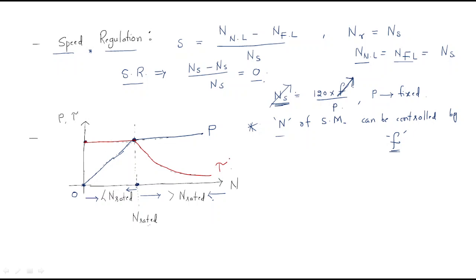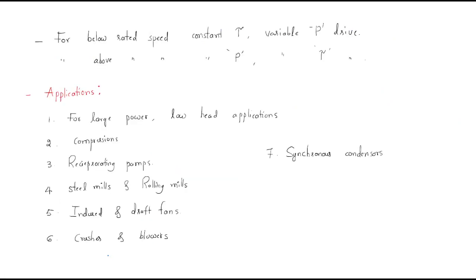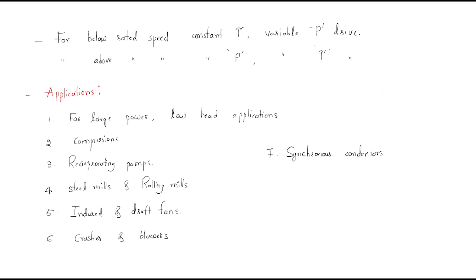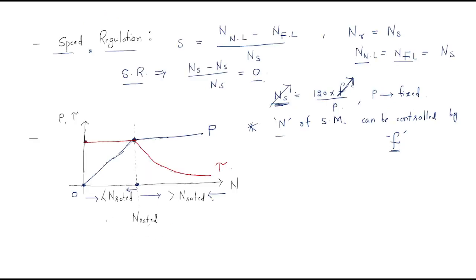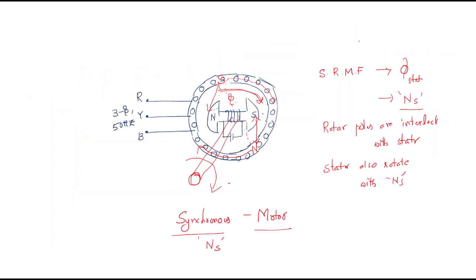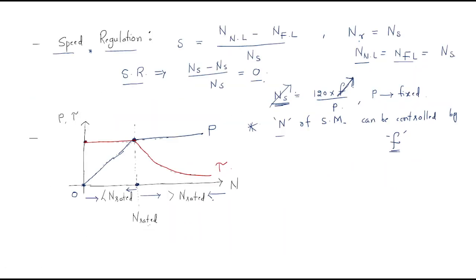From the power and torque relations we can conclude two things. For below rated speed, it will be acting as a constant torque device and variable power drive. For above rated speed, it will be acting as a constant power drive and variable torque drive. Depending on different speeds it will be acting like this. This is about the introduction, working of the synchronous motor, and the speed regulation.